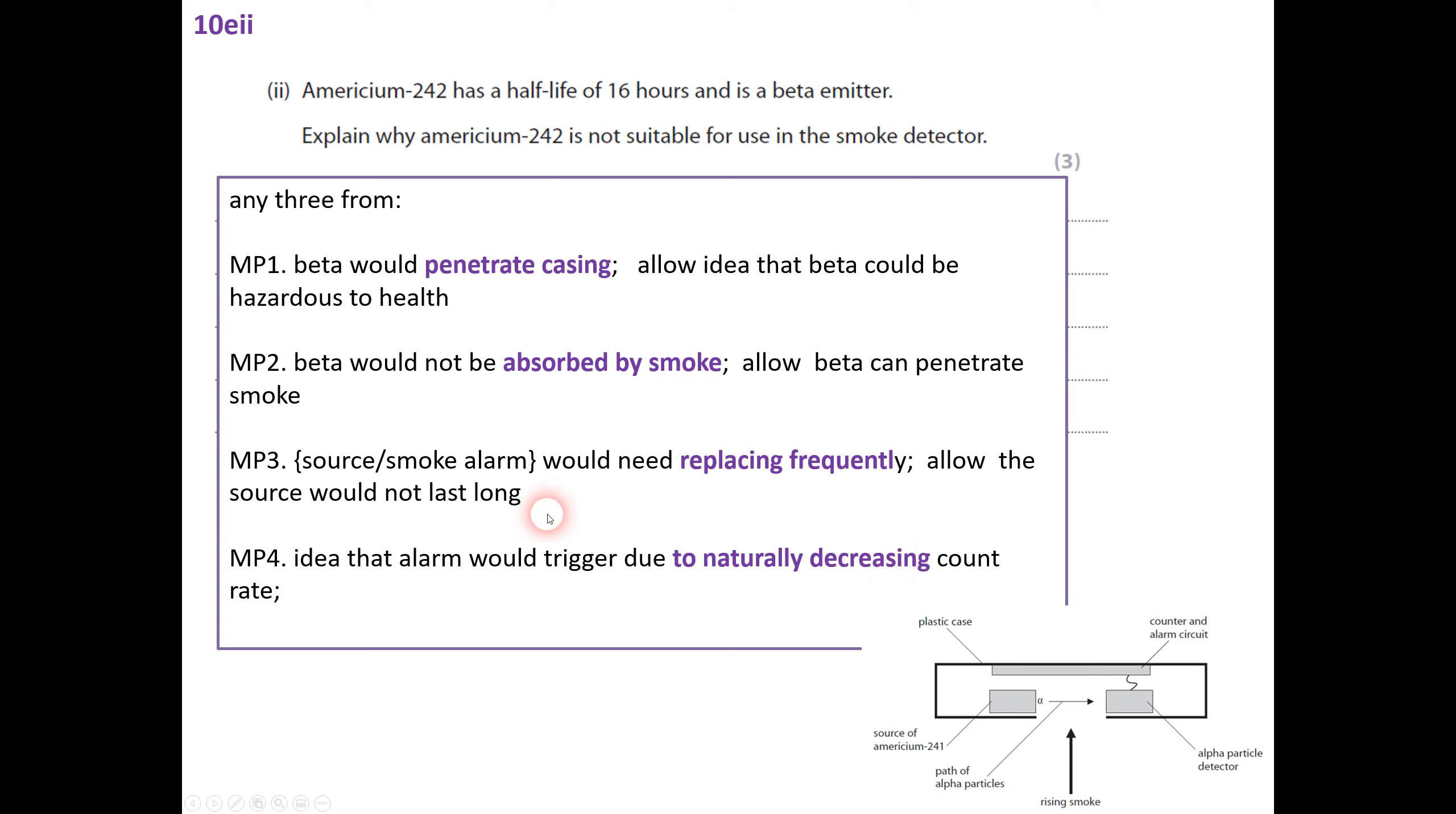Right then. And the last part to this. So Americium-242 has a half-life of 16 hours and is a beta emitter. Explain why it's not suitable for use in a smoke detector. Well, yes, it gives that alpha, but the half-life is 16 hours. So after 16 hours, half of it's gone. So I'm not sure you'd be very happy if you went to the shop to buy one.